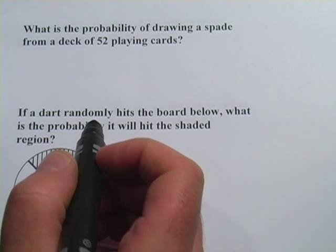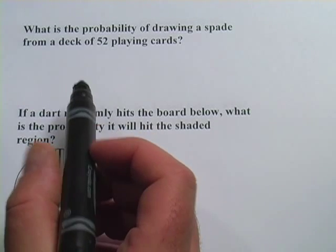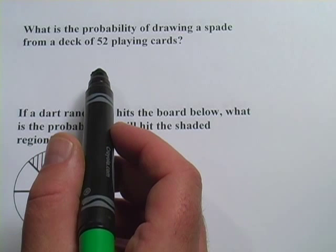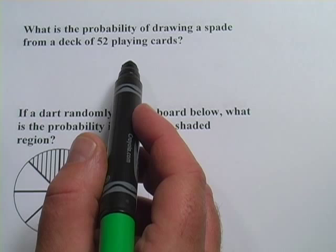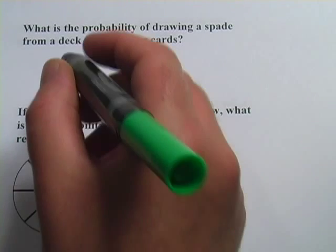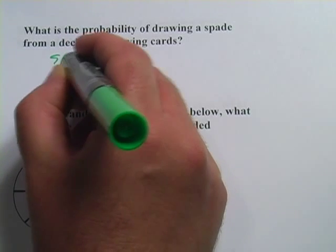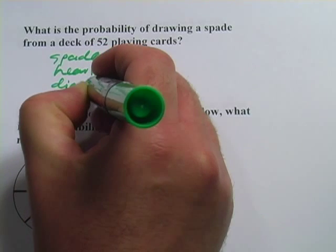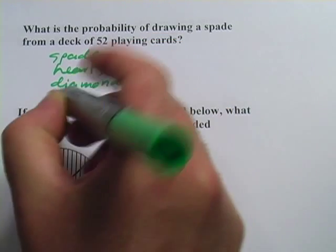Here are some more problems about probability. This first one says, what is the probability of drawing a spade from a deck of 52 playing cards? And to answer this correctly, you really need to know something about playing cards. They're divided up into four suits. There are spades, hearts, diamonds,